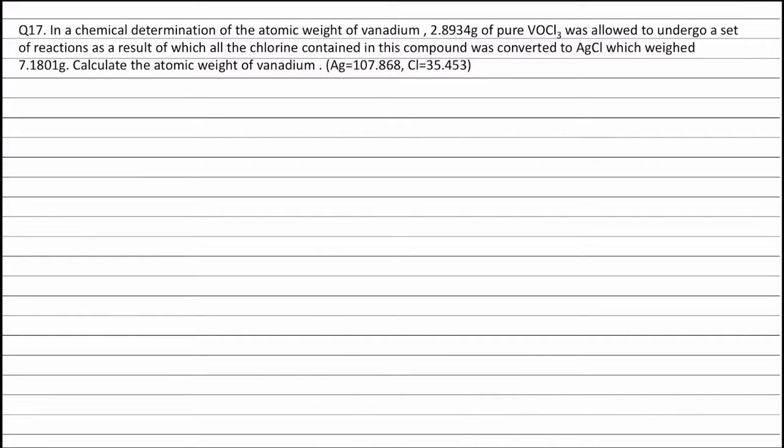Question 17. In a chemical determination of the atomic weight of vanadium, 2.8934 grams of pure VOCl3 was allowed to undergo a set of reactions as a result of which all the chlorine contained in this compound was converted to AgCl which weighed 7.1801 grams.